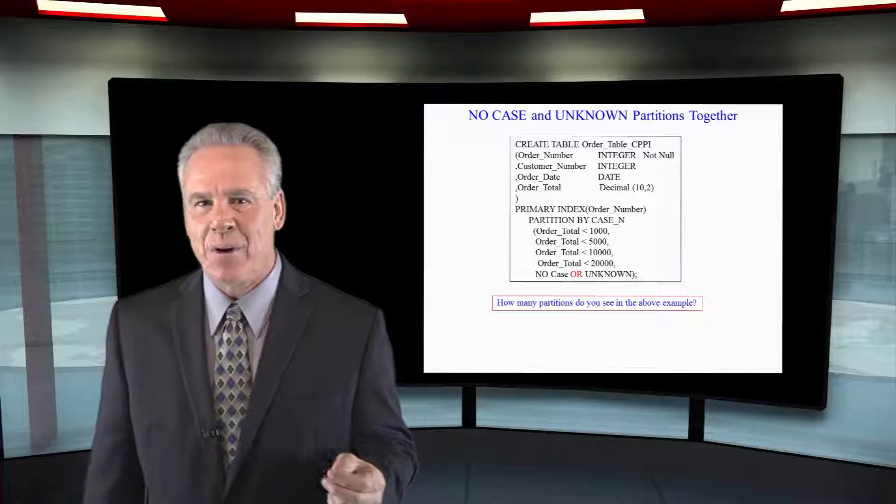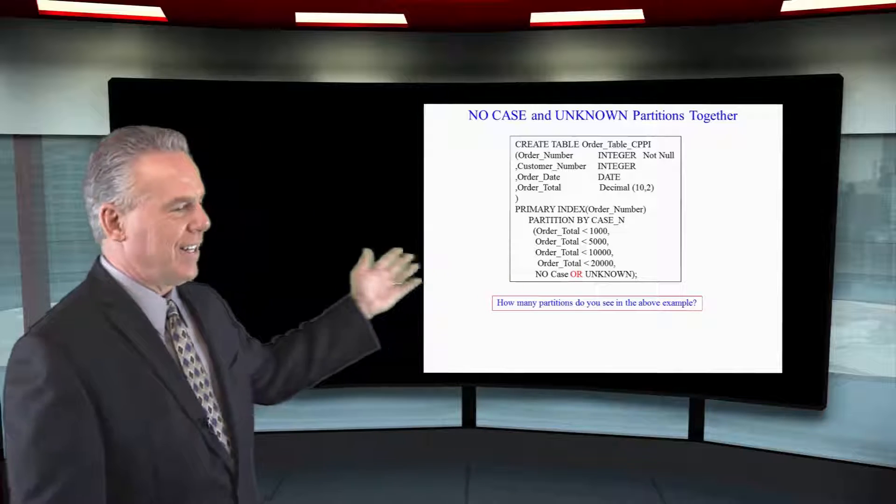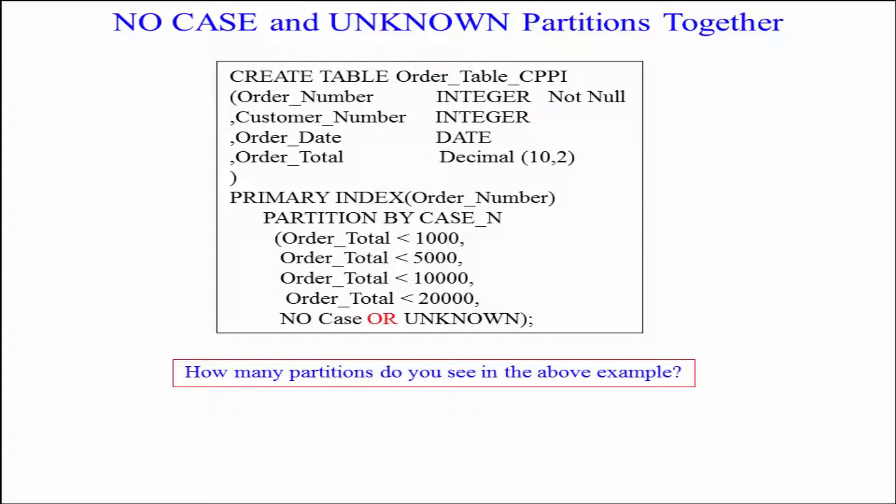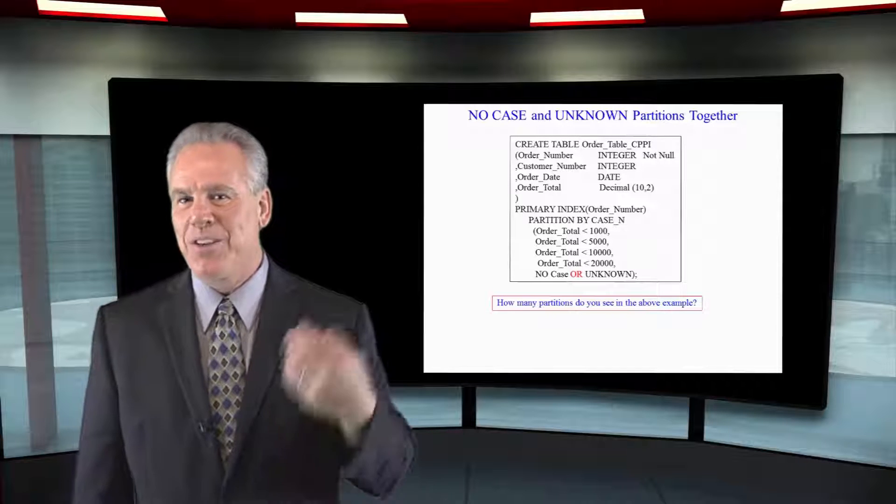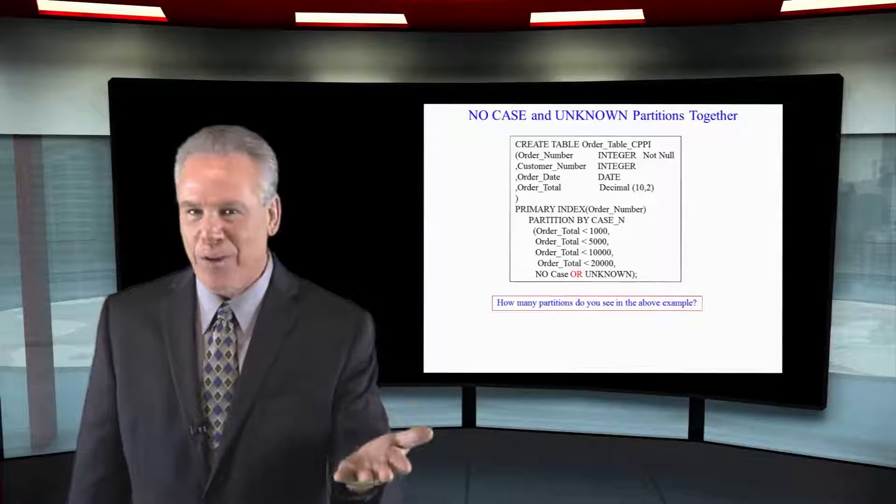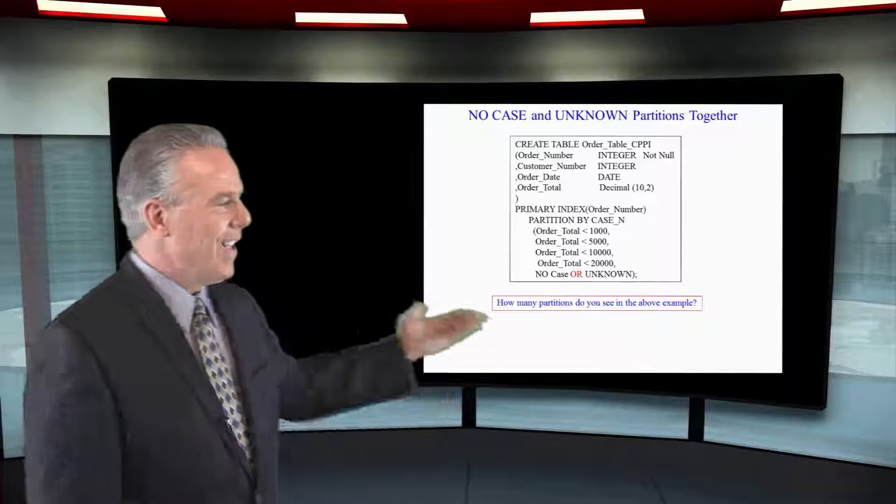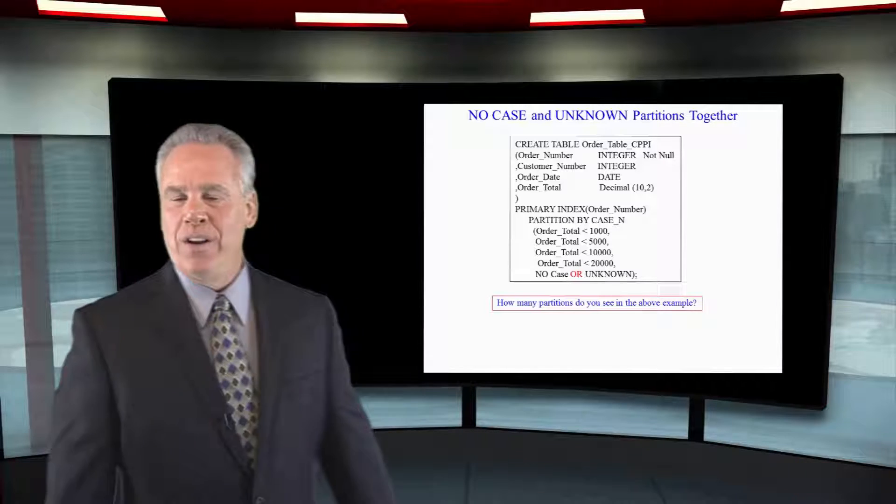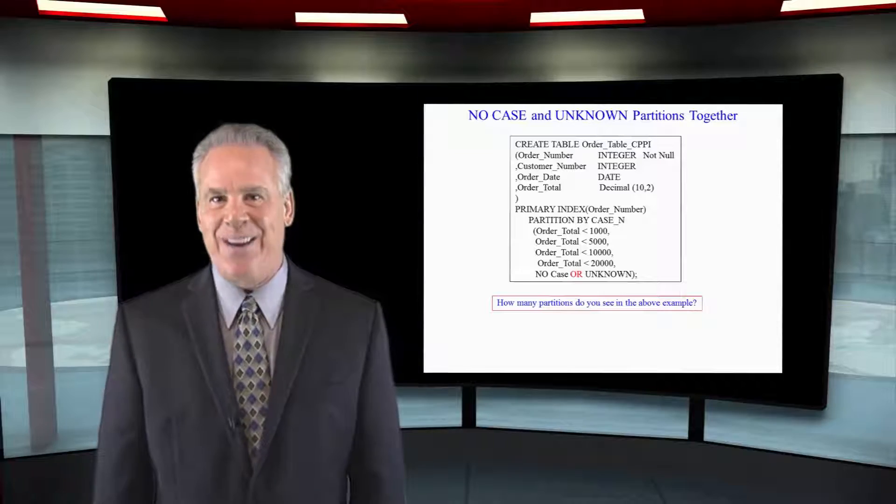Here, I've got my CASE_N partitioning, and I list less than a thousand, less than five. But notice at the very bottom where I say no case or unknown. This means if you've got an order total that is more than 20,000 and it's going to fall through that case, you put it in the no case or unknown. Or if that order total is null, you put them together there.